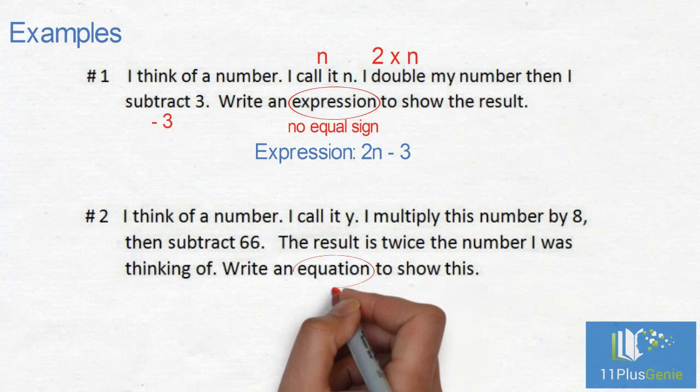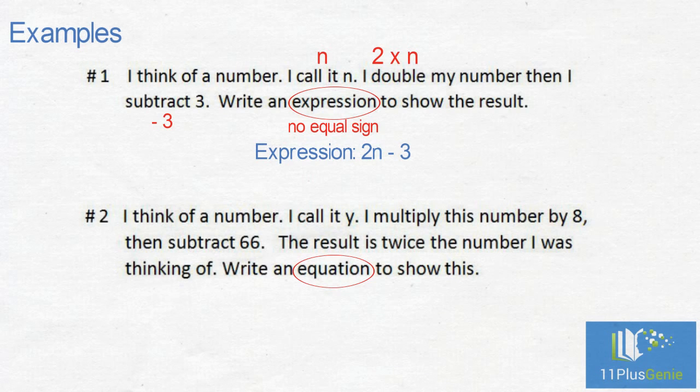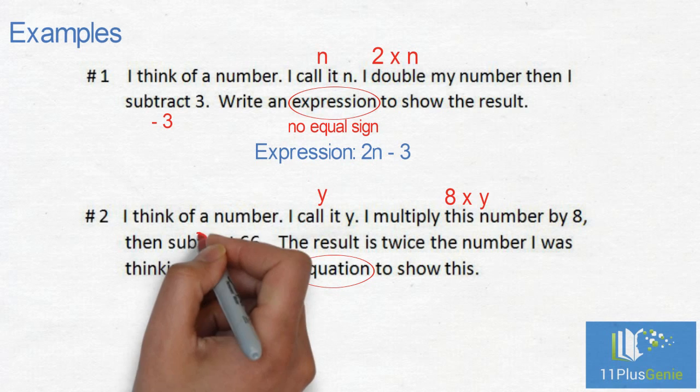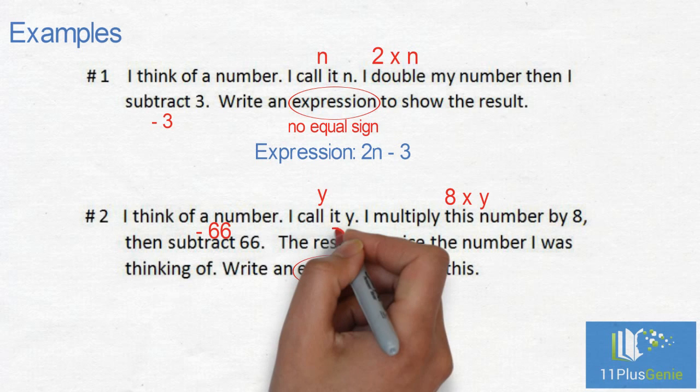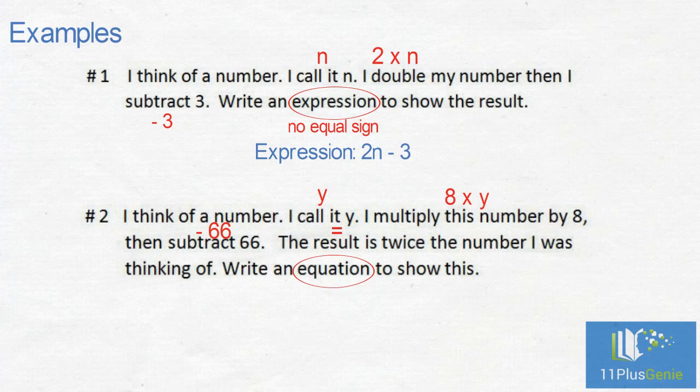In this case we must write an equation, so it must have an equal sign. The number is y. Multiply by 8 is 8 times y. Subtract 66 is minus 66. The result is equals sign. And twice the number is 2 times y.